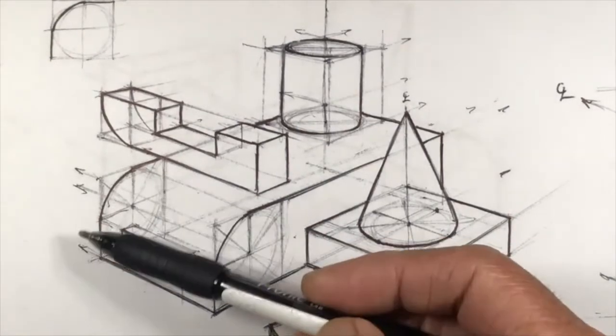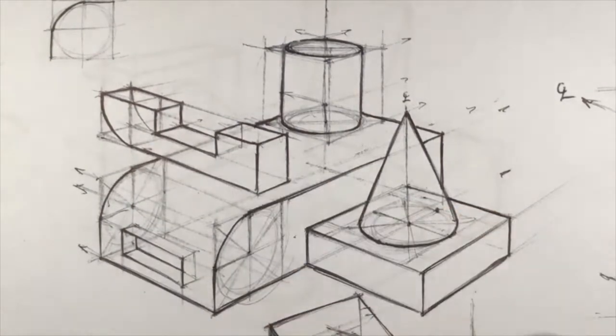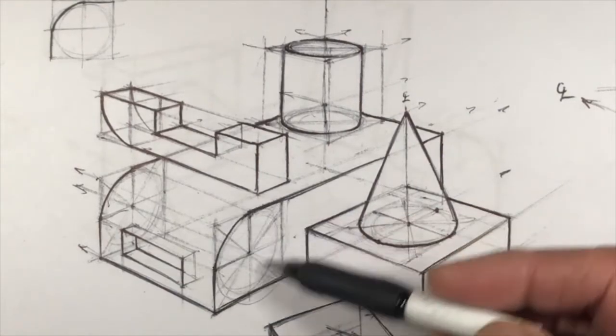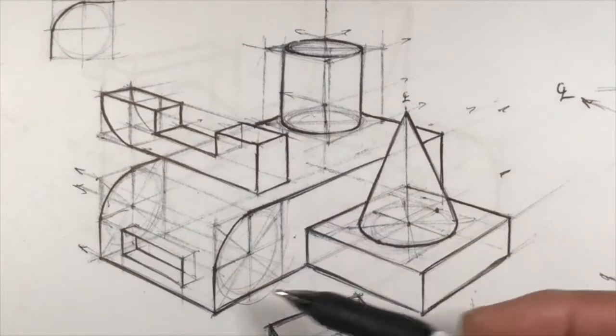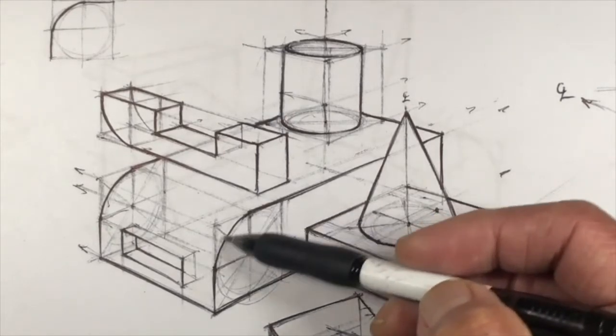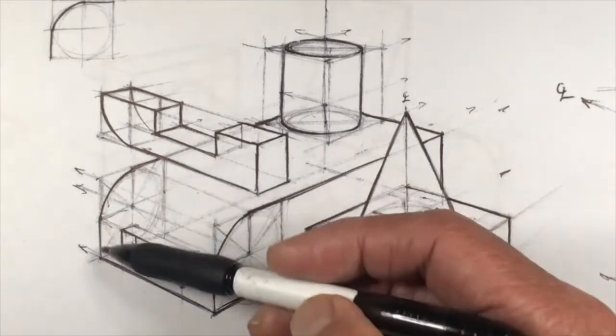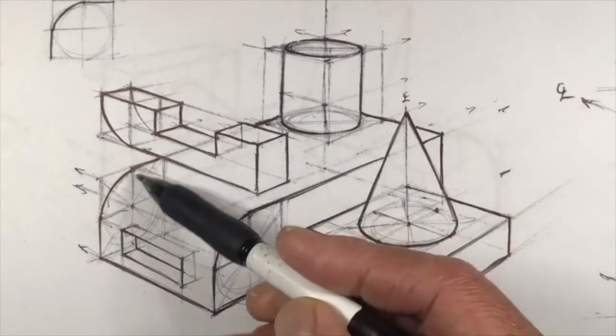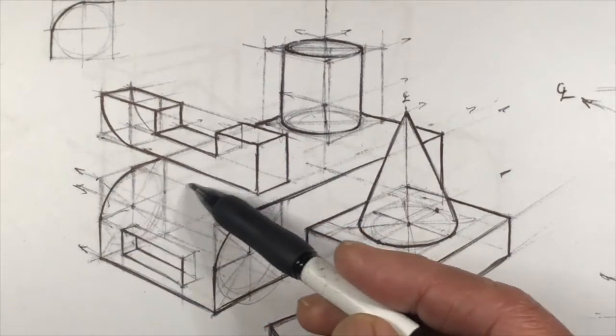Here we've got a radius edge feature similar to the last example I showed you in one-point perspective. I'm really just constructing a cylinder lying on its side in two-point perspective, finding the quarter that I need of the ellipse at the front and the back, and then tracing off that section of the ellipse to create this radius edge.